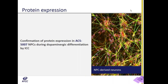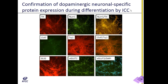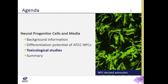In the next slide, I show data confirming the gene expression data with immunohistochemistry analysis of the ACS5007 neural progenitor cells. We performed immunohistochemistry using antibodies against tyrosine hydroxylase, NUR1, GLS2, VGLUT2, CHAT, and TUJ1 on ACS5007 NPCs differentiated using dopaminergic media for three weeks. Consistent with the qRT-PCR data, we saw staining for all of these neuronal markers.